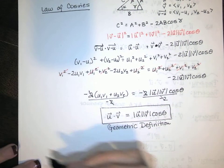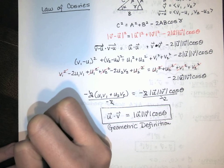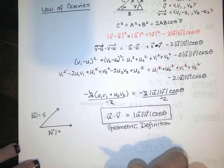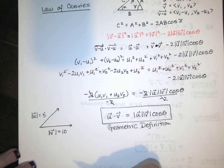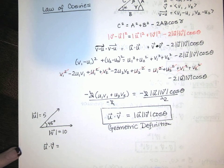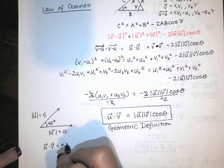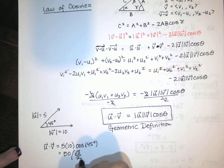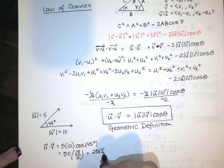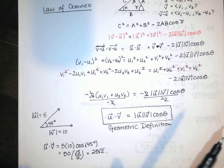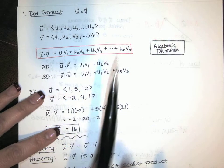This is very powerful. For example, if the length of u is 5, the length of v is 10, and the angle between them is 45 degrees, then u dot v equals 5 times 10 times cosine(45°), which is 50 times √2/2, giving a dot product of 25√2.